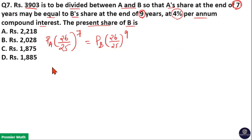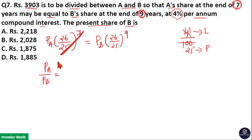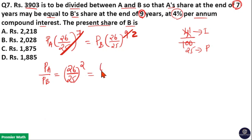At 4% rate of interest, 4 goes 25 times in 100, so 1 unit is interest and 25 units is principle, making the amount 26. Since the rate is common, take the difference in years: 9 minus 7 = 2. So Principle of A / Principle of B = (26/25)^2 = 676/625.